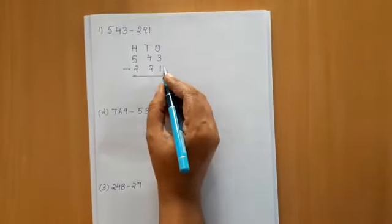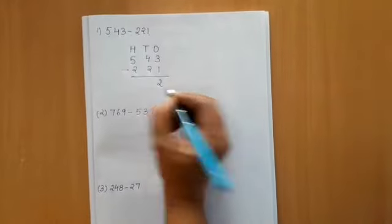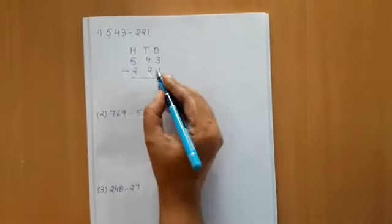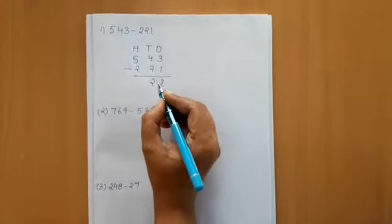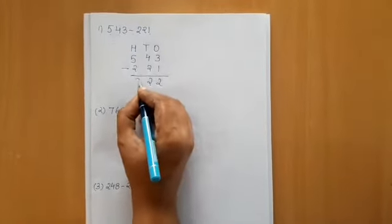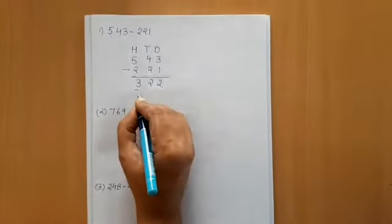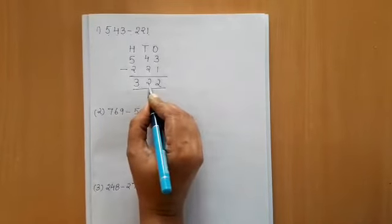Now, 3 minus 1 is 2. 4 minus 2 is 2. And 5 minus 2 is 3. So, the answer is 322.